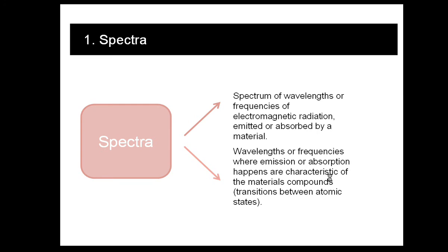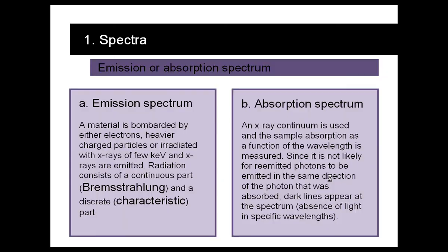When we talk about the spectrum, we mean a spectrum over a range of different frequencies or wavelengths of electromagnetic radiation that are either emitted or absorbed by a material and that are characteristic of this material. It's either an emission or an absorption spectrum.